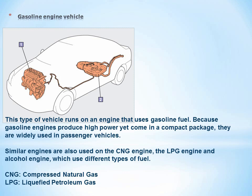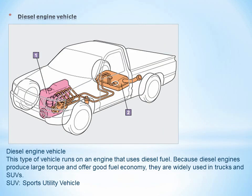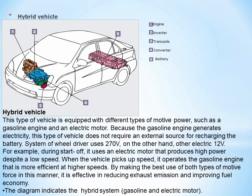Diesel engine vehicle: This type of vehicle runs on an engine that uses diesel fuel. Because diesel engines produce large torque and offer good fuel economy, they are widely used in trucks and SUVs (Sports Utility Vehicles). Key components include: 1. Engine, 2. Fuel tank (Diesel fuel).